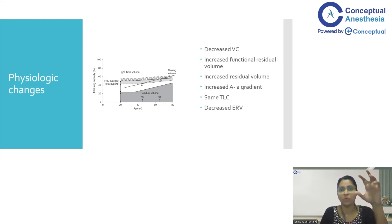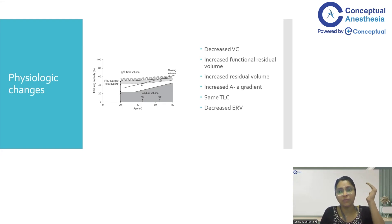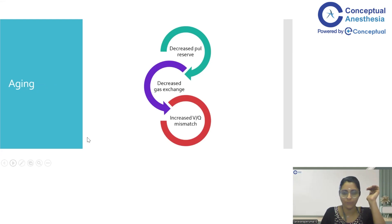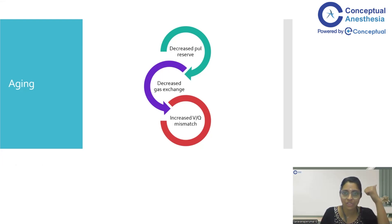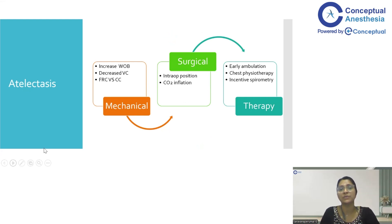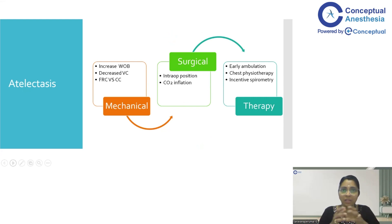This physiology must be kept in mind — the closing volume will approximate to the FRC in elderly patients. There will be decreased vital capacity, increased functional residual volume, and increased residual volume. There will also be a decrease in inspiratory and expiratory reserve volume, but the total lung capacity will remain the same because of a concomitant increase in residual volume and FRC. These aged patients are associated with decreased pulmonary reserve due to loss of elastic recoil, decreased gas exchange, and increased V/Q mismatching in the perioperative period.